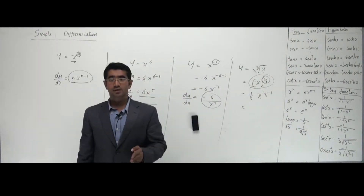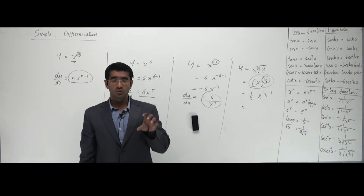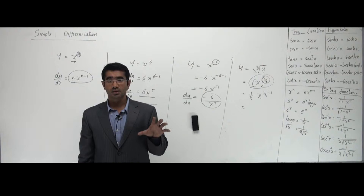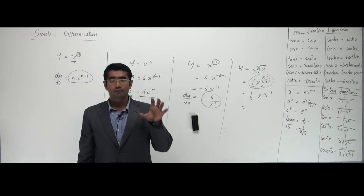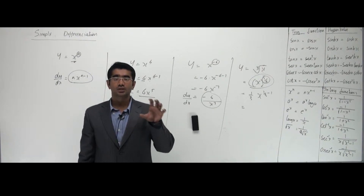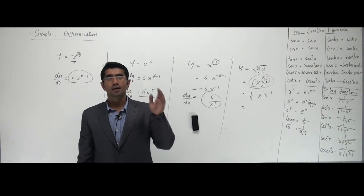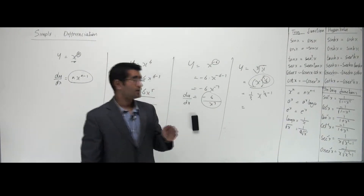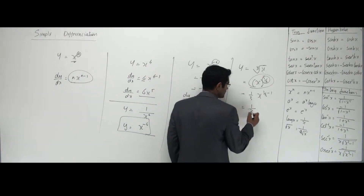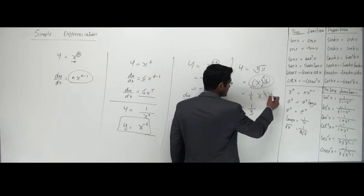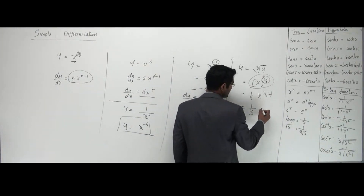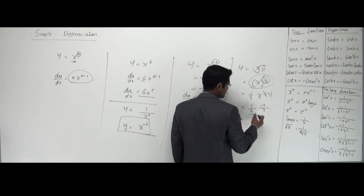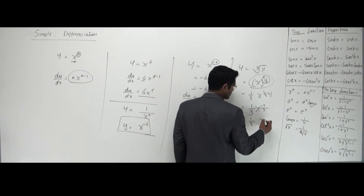So in this case, the simplest differentiation of y equals x to the power n — if the question does not look like y equals x to the power n, make it look like that. For this example, taking the LCM of 3, I get 1 by 3 minus 1 equals minus 2 by 3, so the answer is 1 by 3 into x to the power minus 2 by 3.